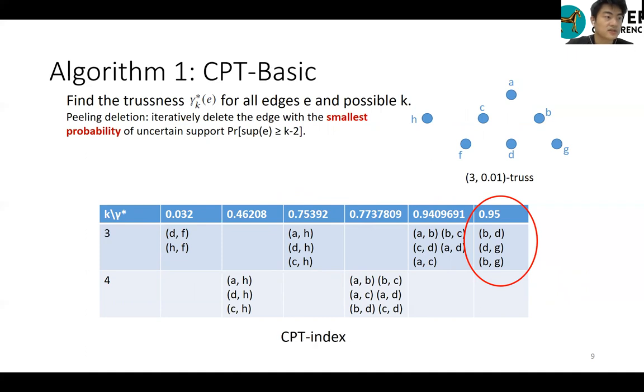We do it the same for other k values. We record the issue removed edge, which is our CPT index. This process is also our first algorithm, CPT-basic. The time complexity of our CPT-basic algorithm is rho times t times dmax plus log m, where rho is the opacity of the graph, t is the total number of k-truth edges for different k, dmax is the maximum degree and m is the number of edges in the graph.